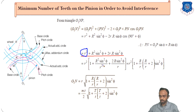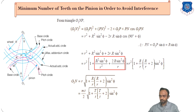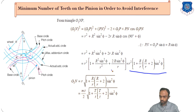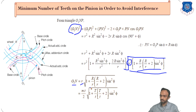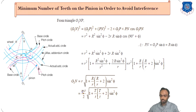After simplification, taking the square root, O1N = r·√[1 + (R/r)·(R/r + 2)·sin²φ]. This is the final formula for the maximum possible addendum radius O1N.